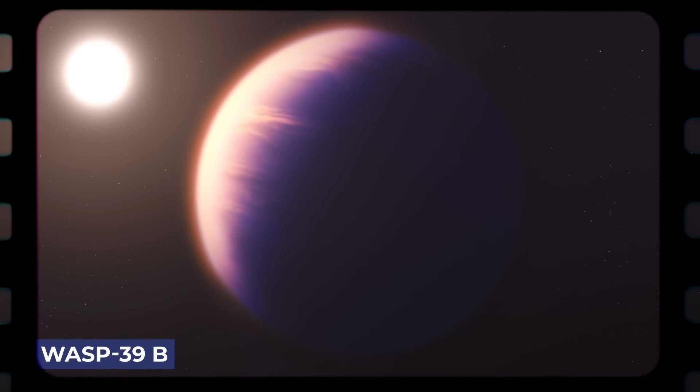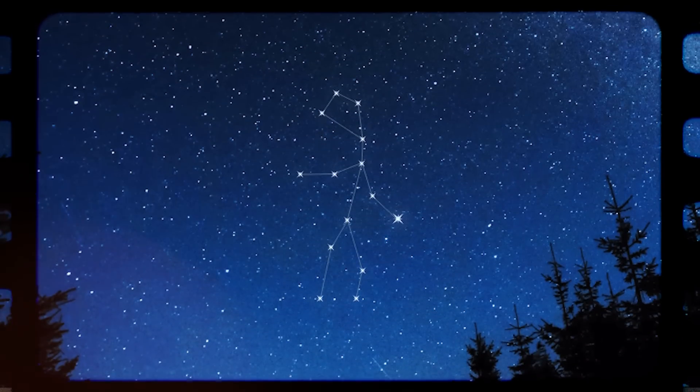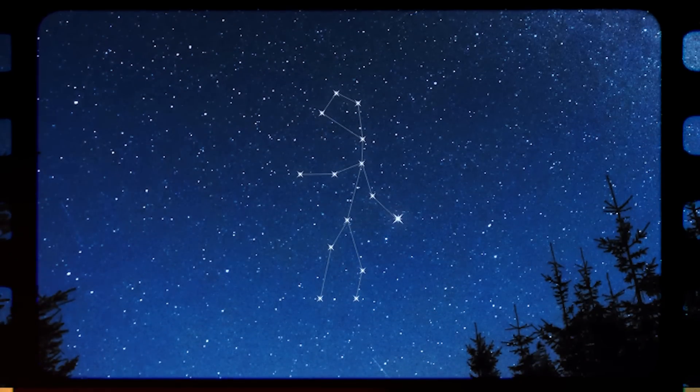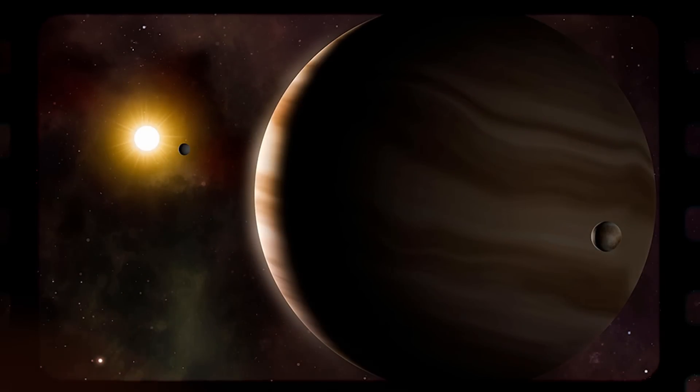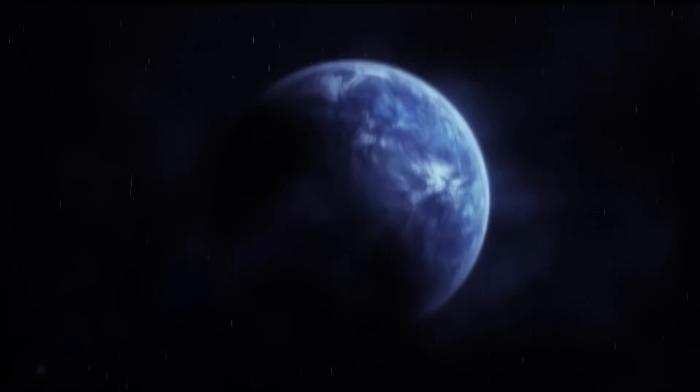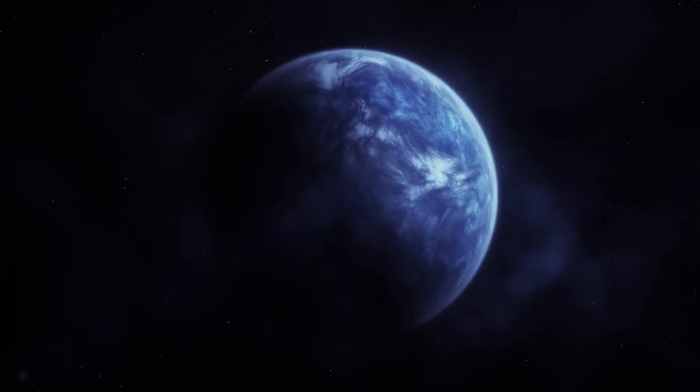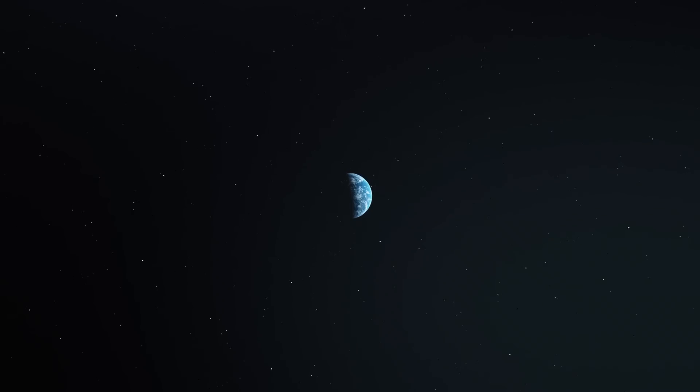WASP-39b, a hot gas giant planet circling a sun-like star 700 light-years away in the constellation Virgo, was the observatory's first exoplanet target. Water, sulfur dioxide, carbon monoxide, sodium, potassium, and,